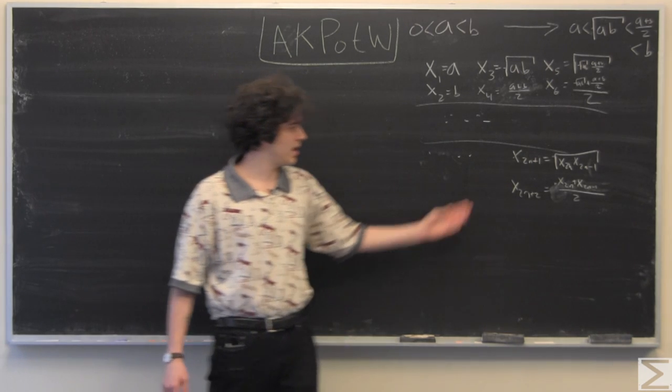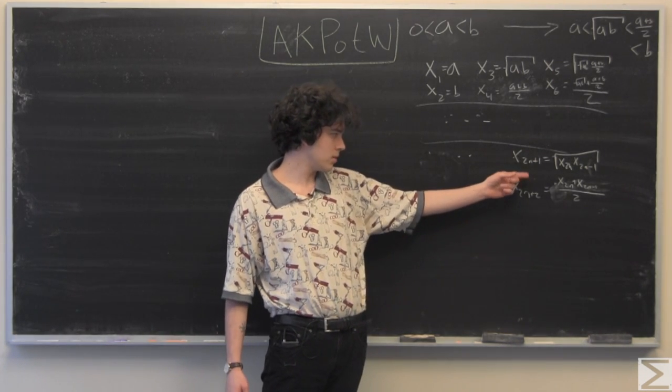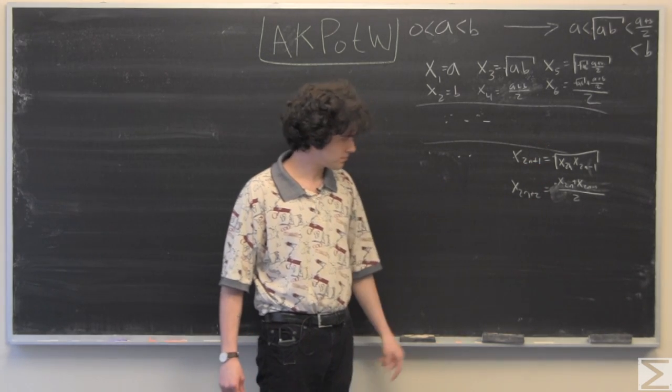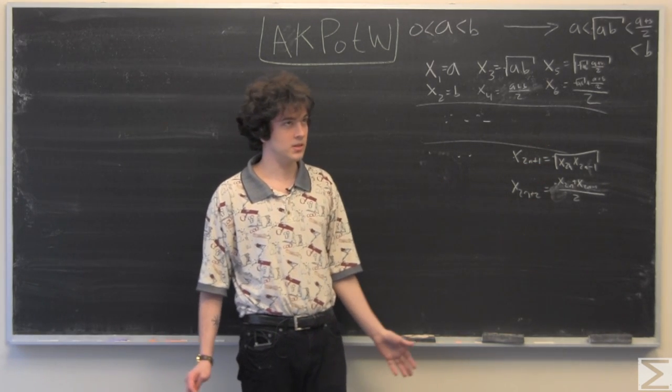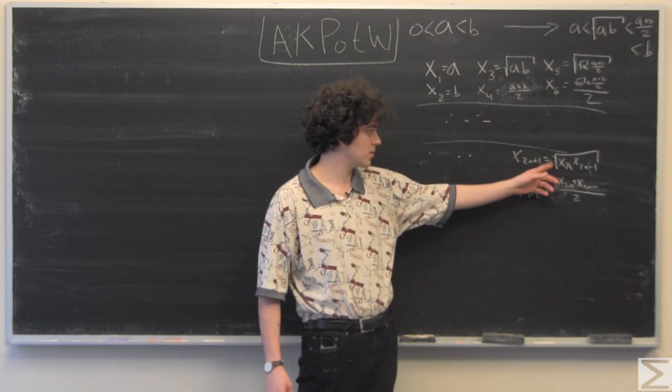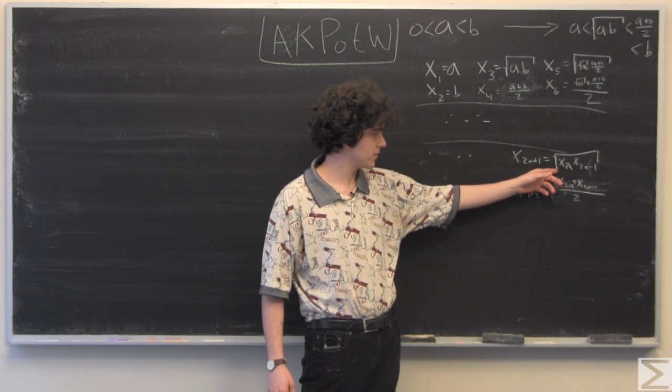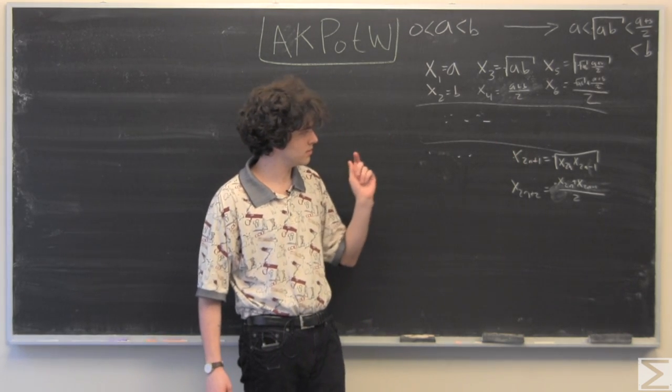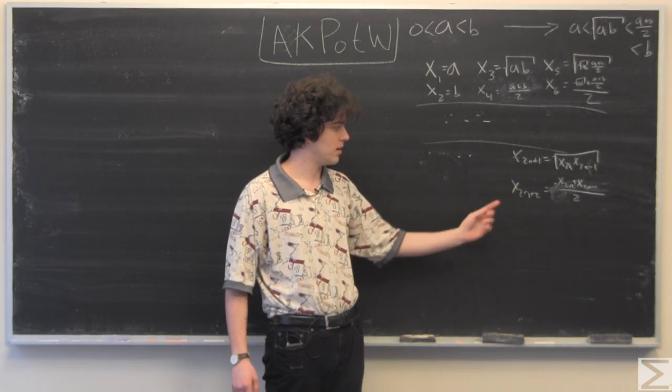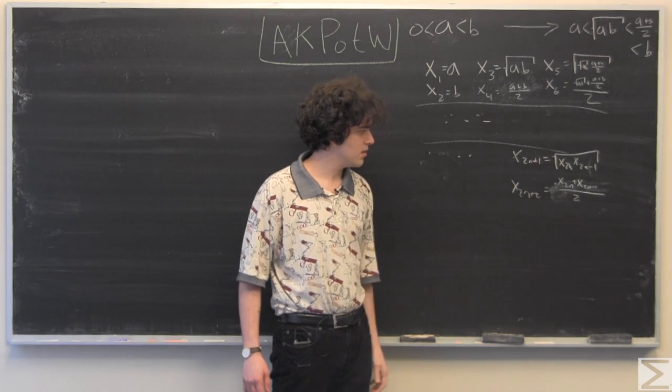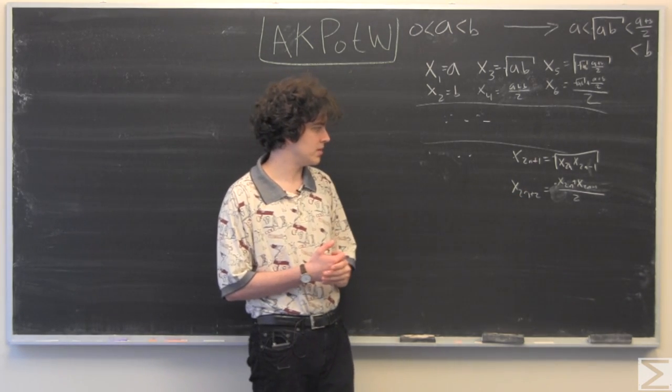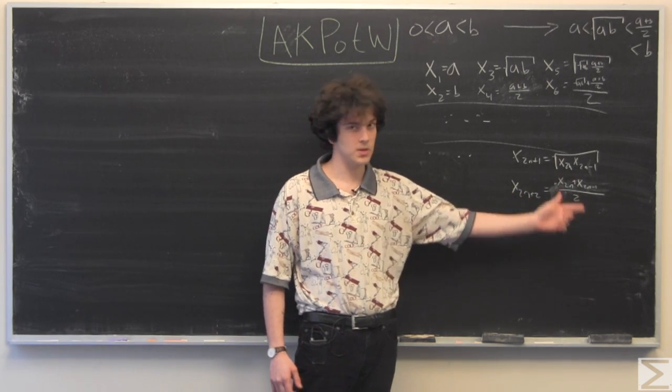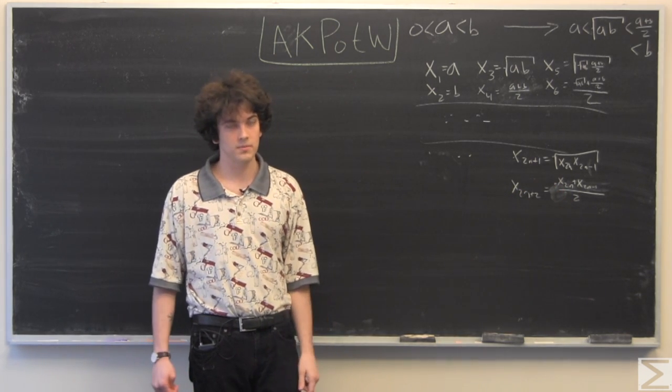x2 equals b, and x sub 2n plus 1 is equal to the square root of x sub 2n times x sub 2n minus 1, and then x sub 2n plus 2 is equal to 1 half of the sum of those two terms.